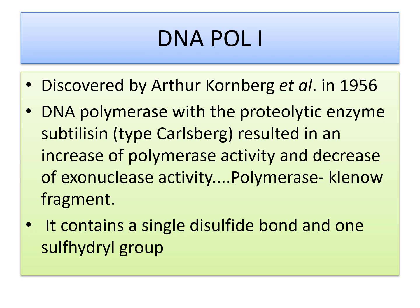DNA polymerase 1 was discovered by Arthur Kornberg et al. in 1956. Treatment of this DNA polymerase with the proteolytic enzyme subtilisin resulted in an increase of polymerase activity and a decrease of exonuclease activity, because the polymerase activity resides in the Klenow fragment which was cleaved from the enzyme by the proteolytic enzyme activity.